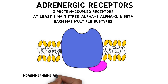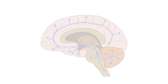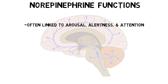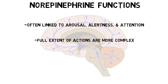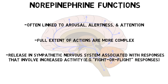Norepinephrine is removed from the synaptic cleft by a transport protein called the norepinephrine transporter. Like any neurotransmitter, the actions of norepinephrine depend on the type of receptor it activates and where that receptor is located. Thus, although norepinephrine in the central nervous system is frequently associated with arousal, alertness, and attention, the full extent of its actions are more complex. Its release in the sympathetic nervous system is typically associated with responses linked to increased activity, like elevated heart rate and blood pressure.